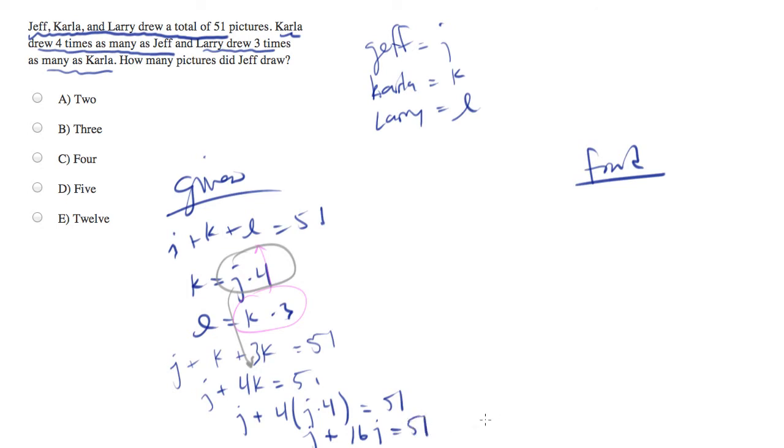Or 17J equals 51. 51 divided by 17 is 3. So, J equals 3.